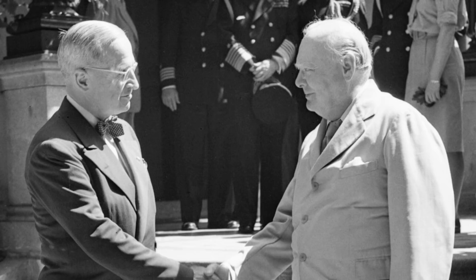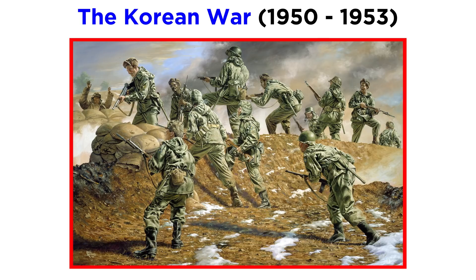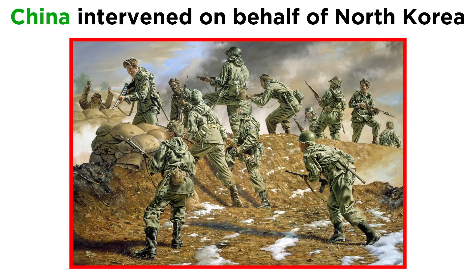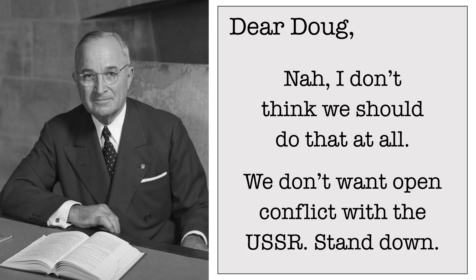Truman's second term would be almost as dramatic as his first. A new wave of anti-communist hysteria gripped America when Mao Zedong's communists took over China and the Russians detonated their first nuclear weapon, both in 1949. When communist North Korea invaded South Korea in 1950, Truman sought United Nations approval for UN forces to fight the Korean aggression. After initial successes in Korea, the communist Chinese intervened and threw the UN forces back, resulting in a stalemate throughout the final years of Truman's presidency. General Douglas MacArthur, legendary hero of World War II, advocated attacking Chinese supply bases, which Truman rejected, concerned that further escalation of the war might lead to open conflict with the Soviet Union, which was using North Korea as a proxy, supplying weapons and jets.